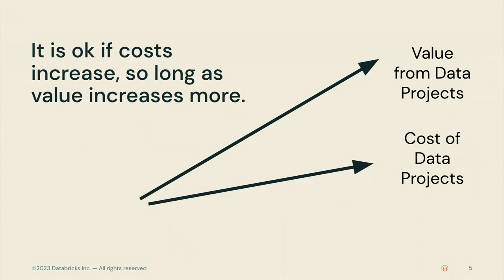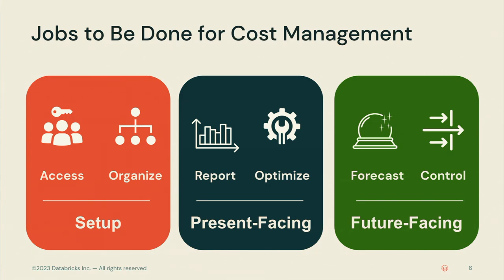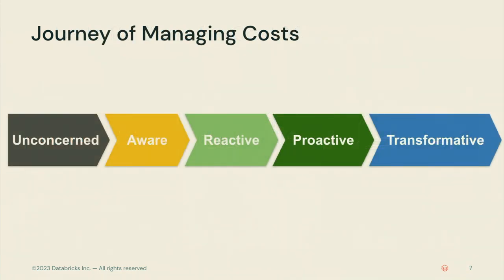That's what I'm here at Databricks to do — help you understand your costs and get more value from them. Today we'll cover a few topics: reporting, how you organize and access your data, and how to put controls in place. When I think about customers thinking about money, I see a maturity curve they progress through — starting unaware, then becoming aware, then reactive, then proactive, and finally transforming how they do business.